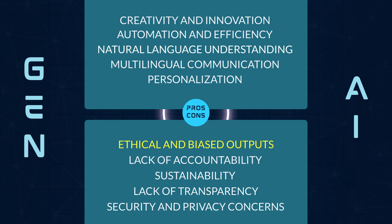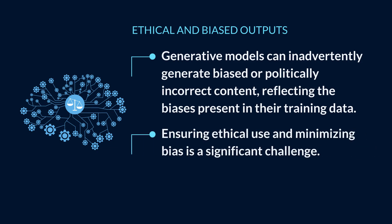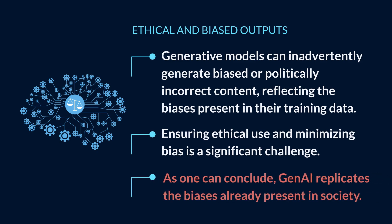Regarding ethical and bias outputs, generative models can inadvertently generate biased or politically incorrect content, reflecting the biases present in their training data. Ensuring ethical use and minimizing bias is a significant challenge. As one can conclude, Gen AI replicates the biases already present in society.